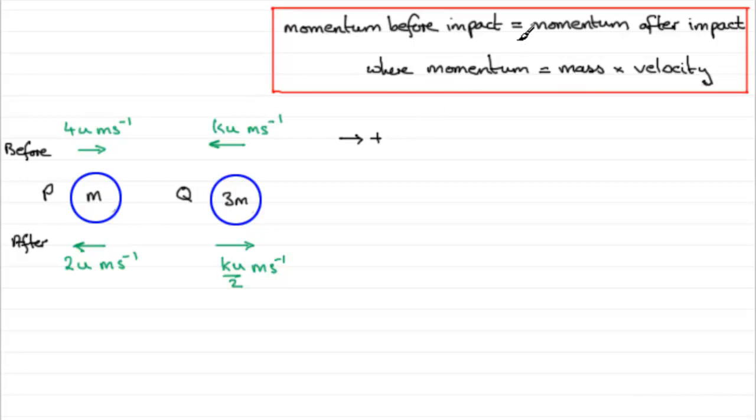So we look at the momentum before impact. Momentum being mass times velocity. So if we start with P first of all, we've got the mass, which is m. And then we have got the velocity. Now we've got a speed of 4u going to the right, so it's in the positive sense. So it would be m multiplied by 4u. I won't write a multiplying sign. I'll just put it in brackets.